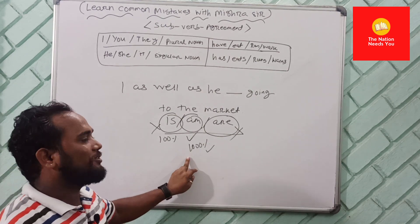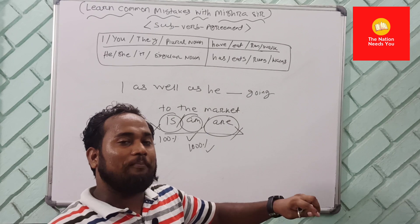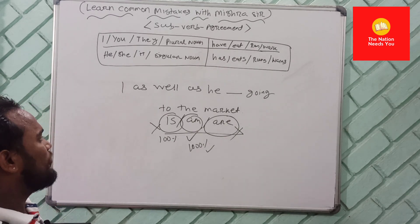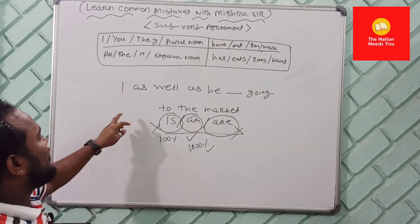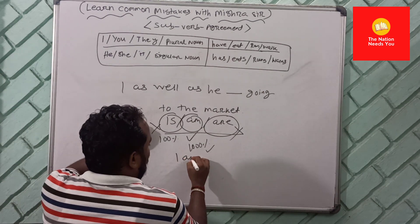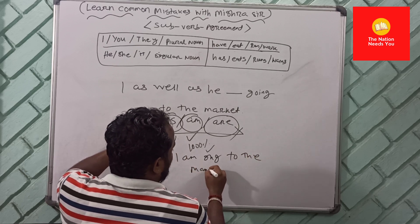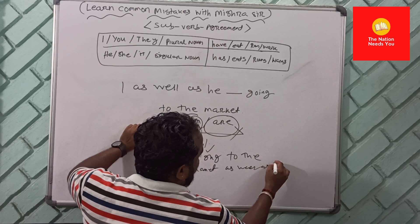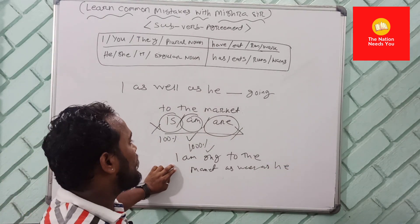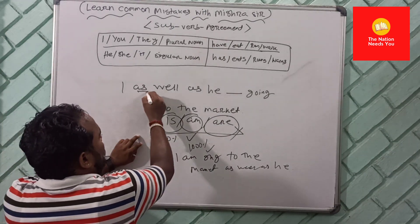The right correct answer is 'am.' This is 1000% correct. Now you have a question in your mind: from childhood I learned 'he is a player, he is a teacher' — how is this possible? Let me explain. This is an indirect sentence. If I make it direct, I can say: 'I am going to the market as well as he.'